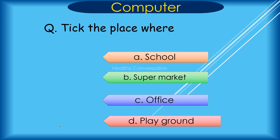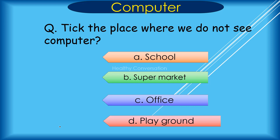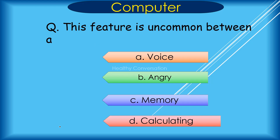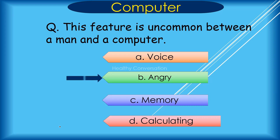Question: This feature is uncommon between a man and a computer. A. Wise, B. Angry, C. Memory, D. Calculating. Correct answer is B. Angry.